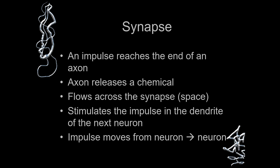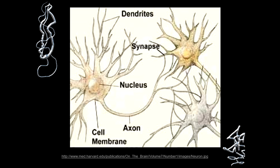These chemicals flow across the synapse. What flows across the synapse is the impulse — a neuron carrying some information. This stimulates an impulse in the dendrite of the next neuron. The impulse then moves from neuron to neuron, to the cell body of another neuron. These are the dendrites, these are the synapses, here is the nucleus, and within the synapses the impulse is moving.